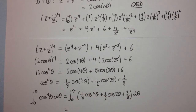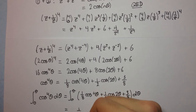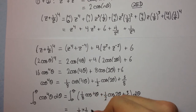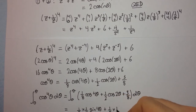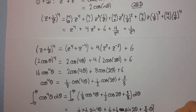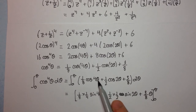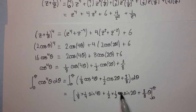Integrating term by term, cosine integrates to sine. Using the reverse chain rule, we divide by the inner derivative: (1/8)·(1/4)sin(4θ) + (1/2)·(1/2)sin(2θ) + (3/8)θ, evaluated between 0 and π.